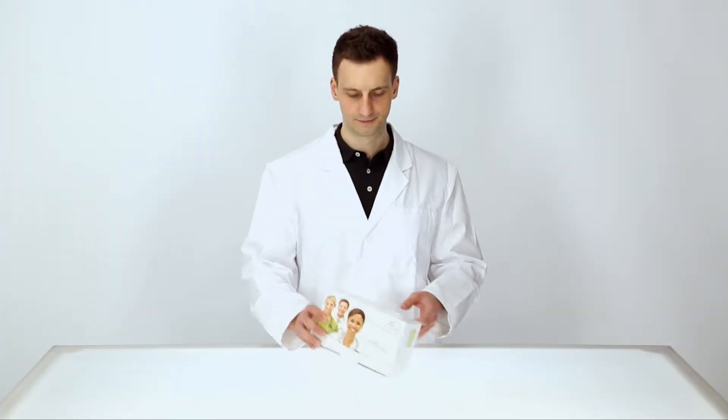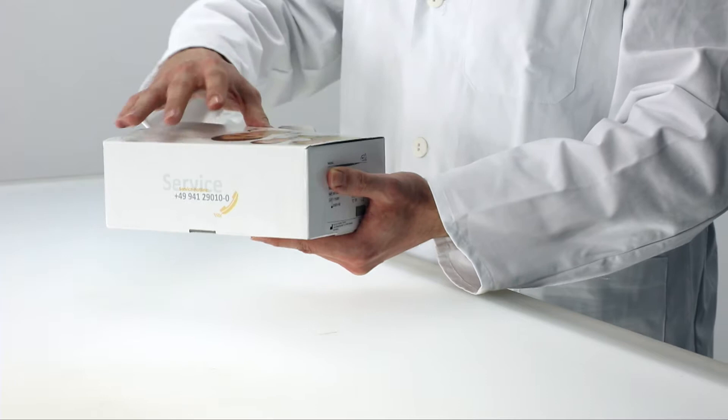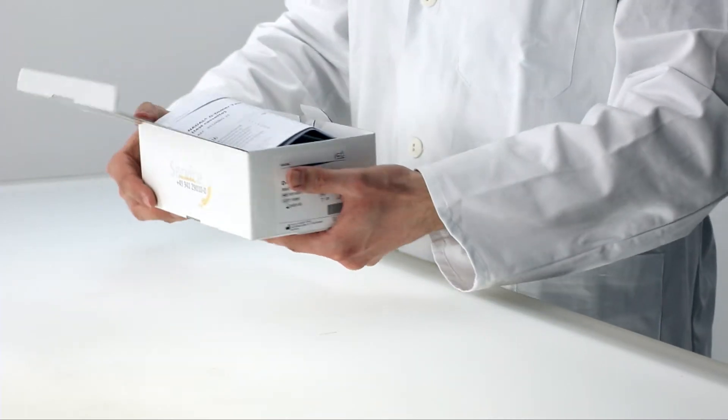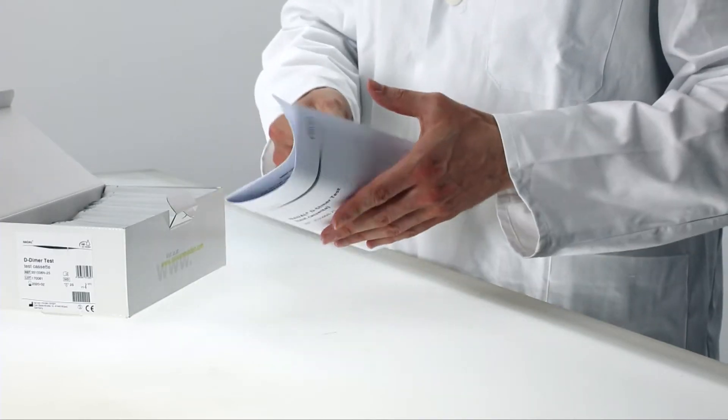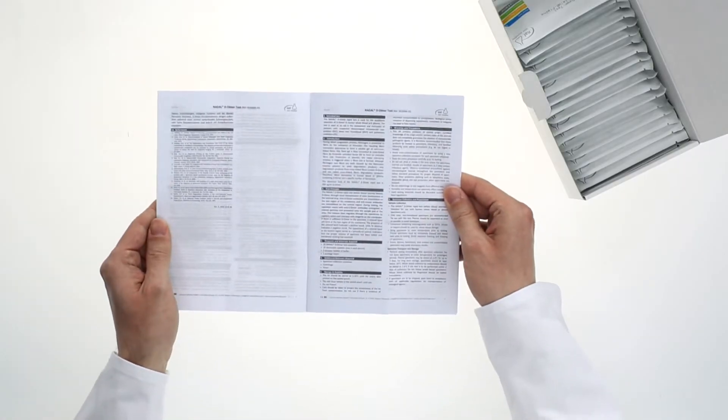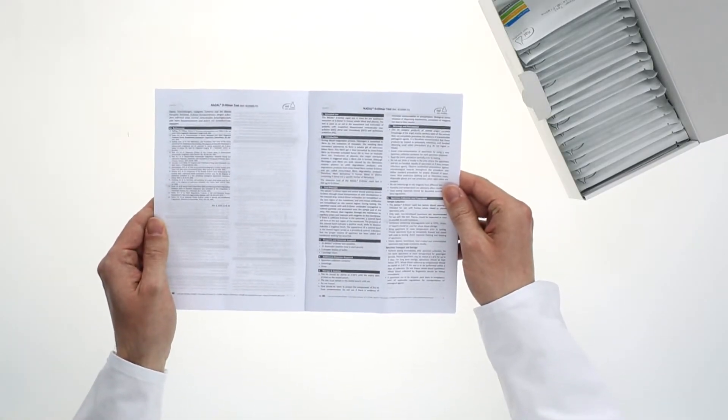The test provides a preliminary result as a diagnostic aid in the case of suspected disseminated intravascular coagulation, deep vein thrombosis and pulmonary embolism. All Nadal rapid tests are based on a similar test principle.